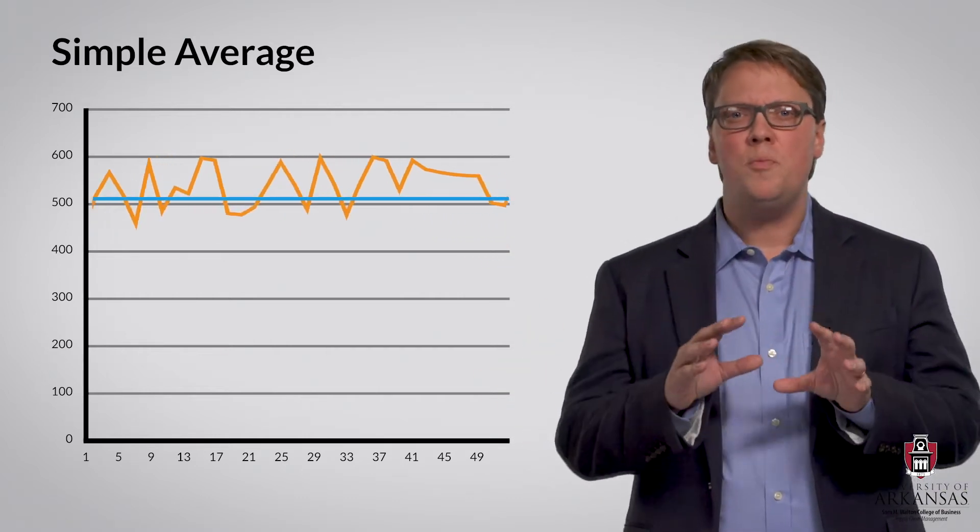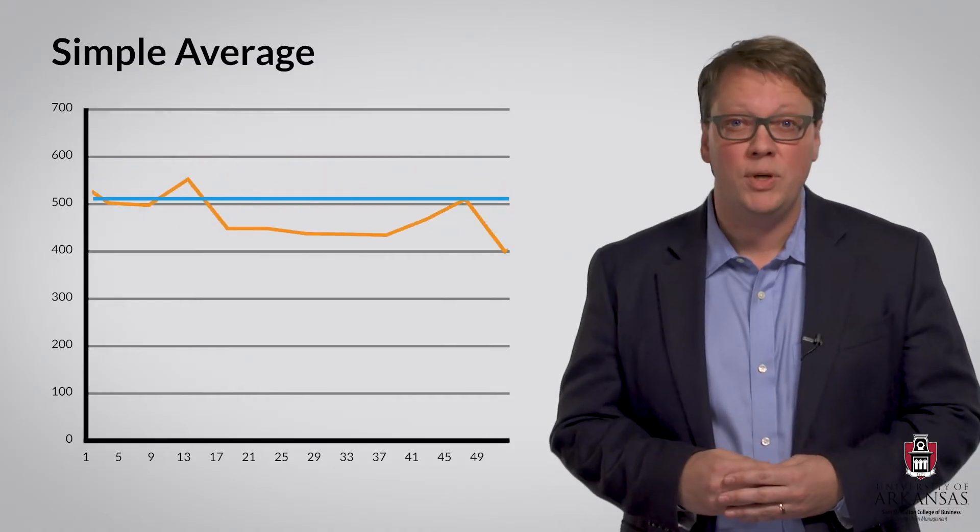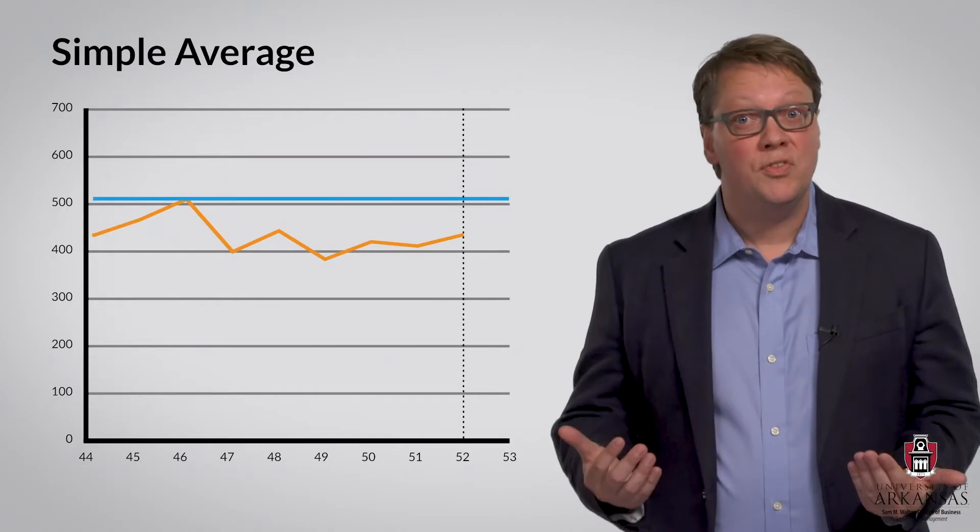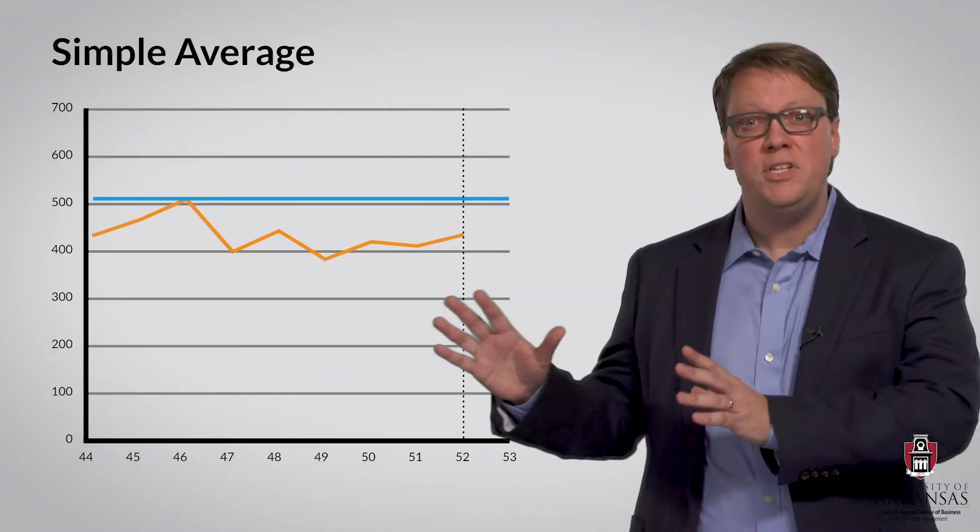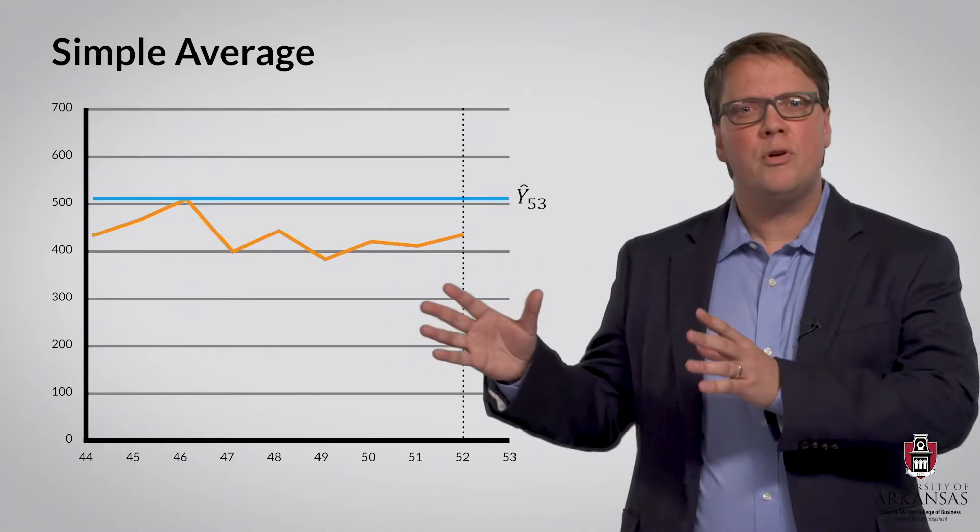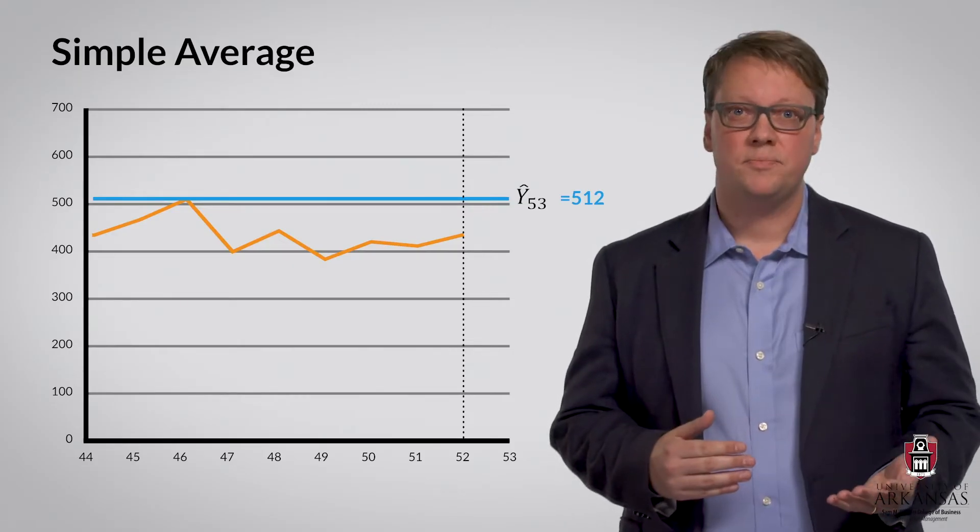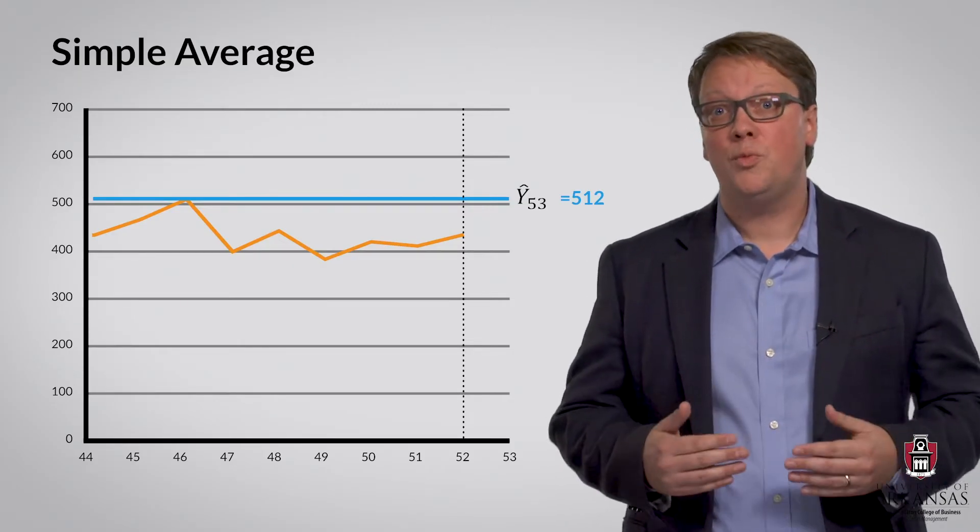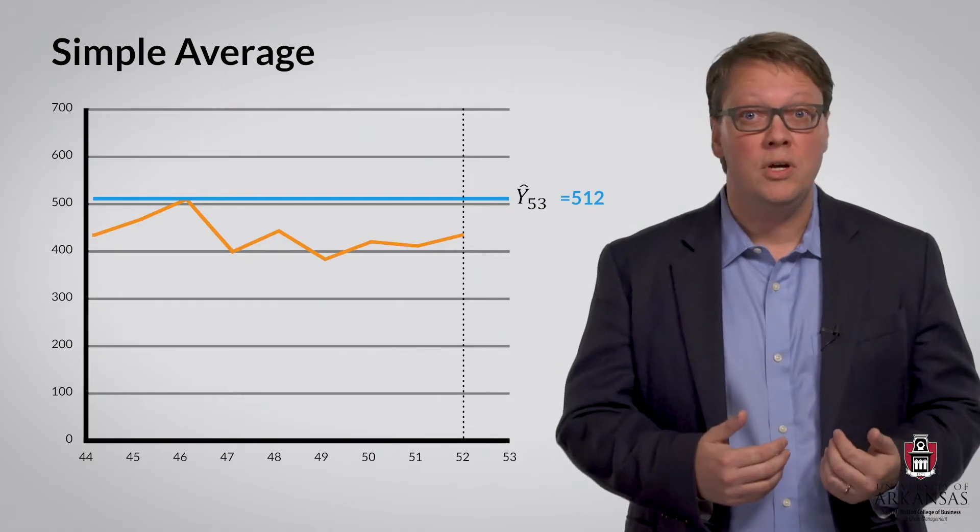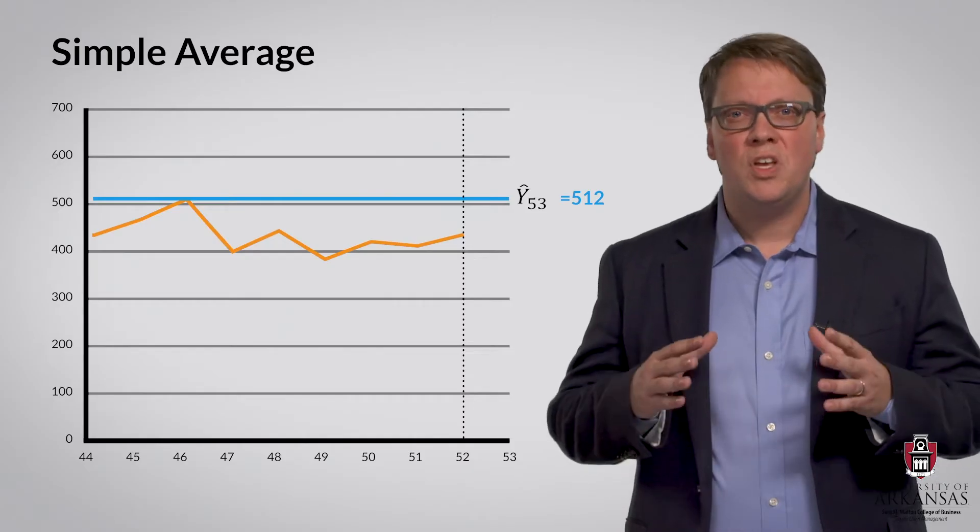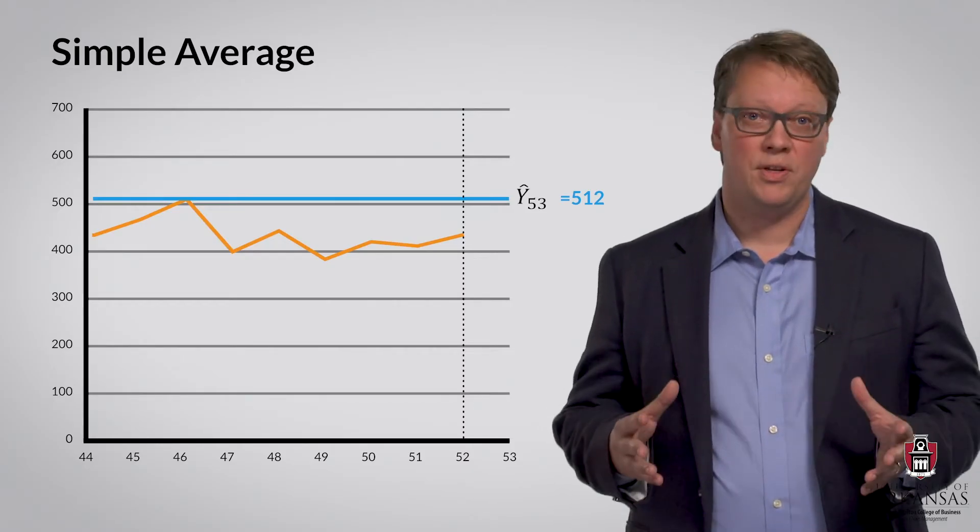Again, let's zoom in and focus on the last few weeks of data. You can see that the average weekly sales volume over the past 52 weeks was a little over 500 units, 512 to be exact. Accordingly, if we are currently in week 52, this will be our forecast for week 53 if we use the simple average forecasting method.